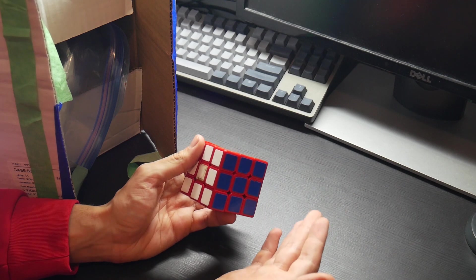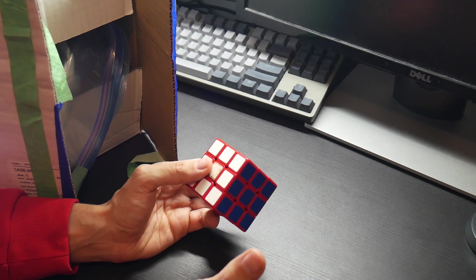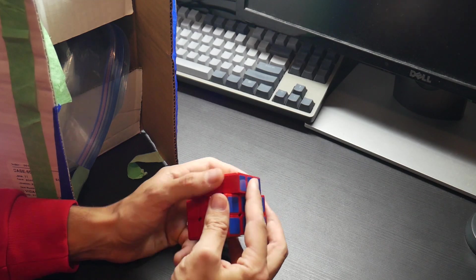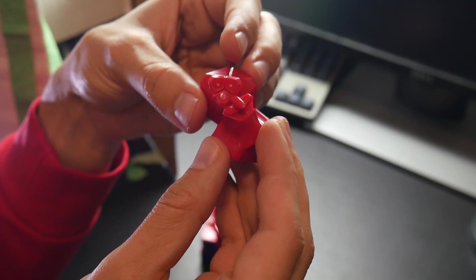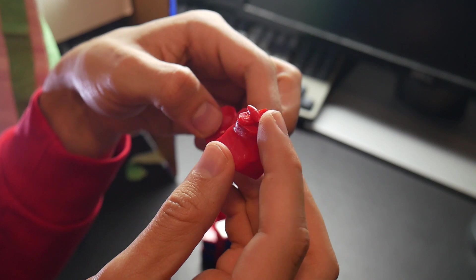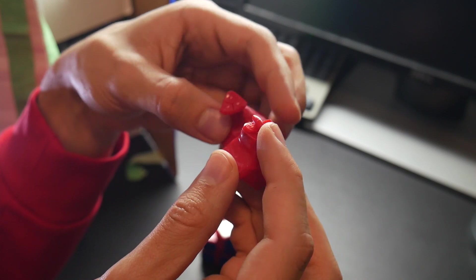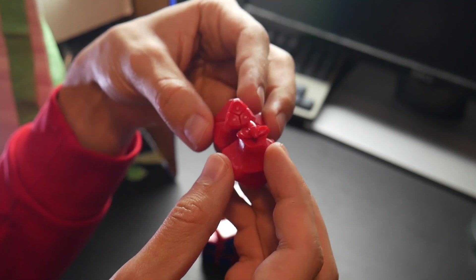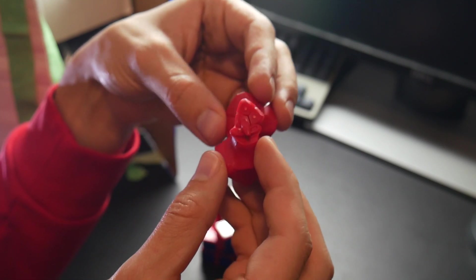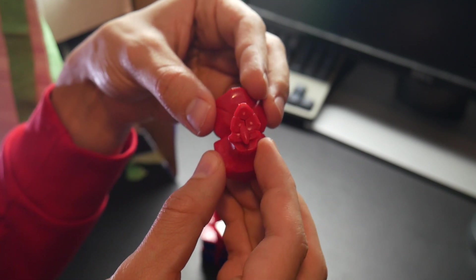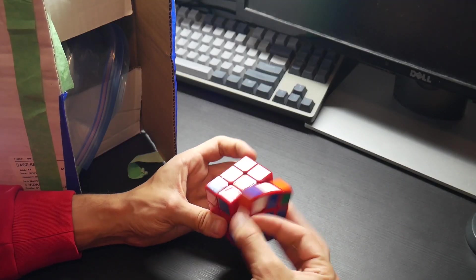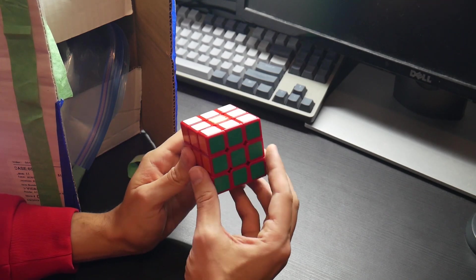It was one of the first cubes to solve the issue of popping. It did so using this mechanism - here's a corner and an edge. So this right here is a torpedo. I'm sure many of you are familiar with this, and this would just lock into the corner piece here and basically prevent it from shooting out of the puzzle.